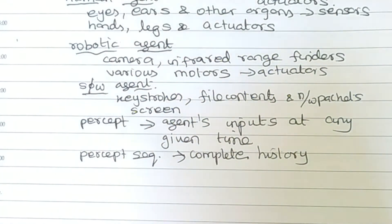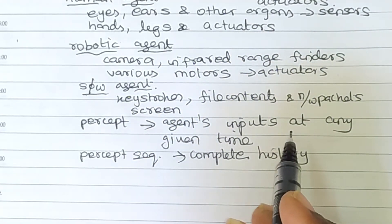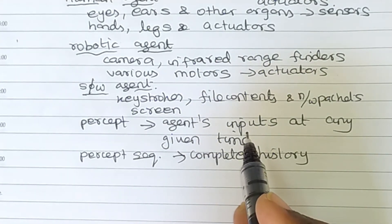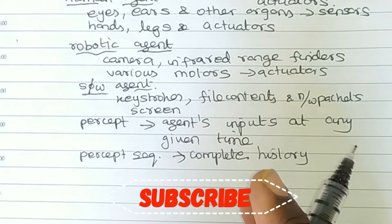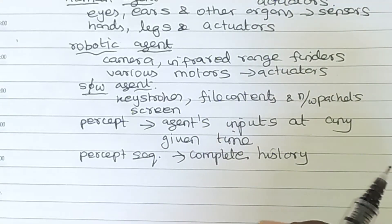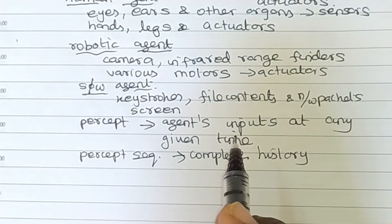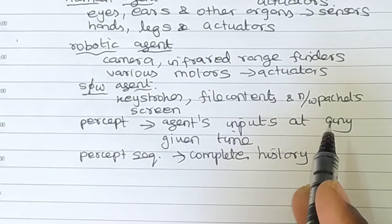After perceiving all the percepts from the environment, the agent acts upon the environment at the corresponding location. The agent creates a choice of action and selects it. The agent's choice of action depends on the entire percept sequence.